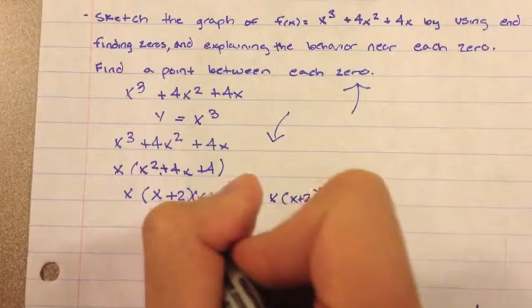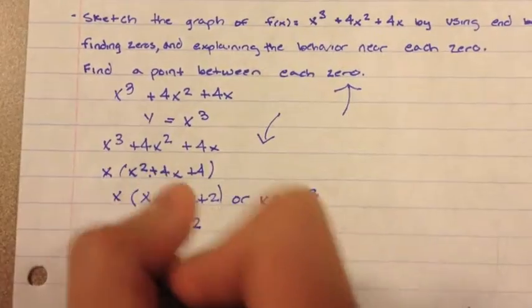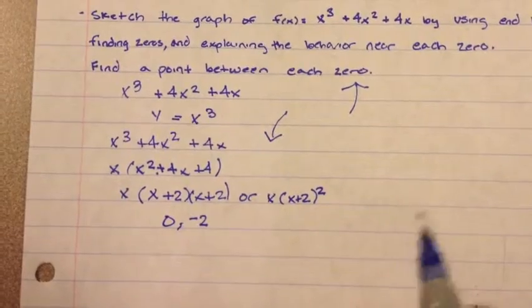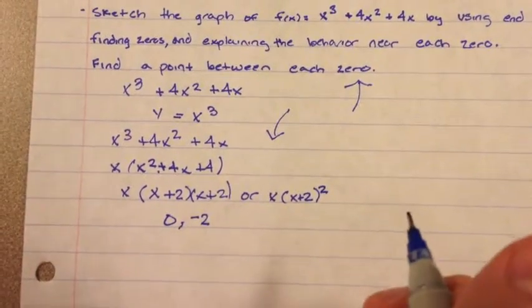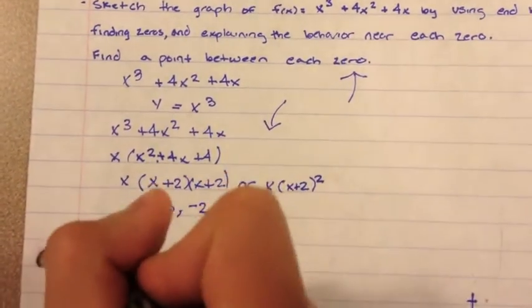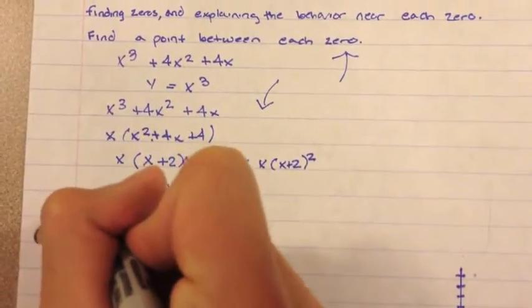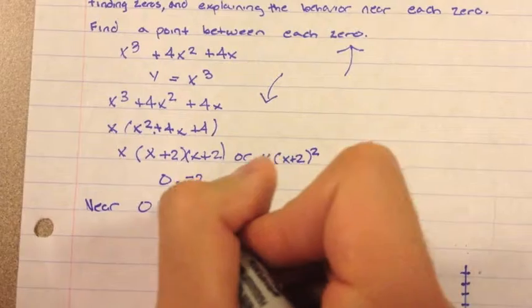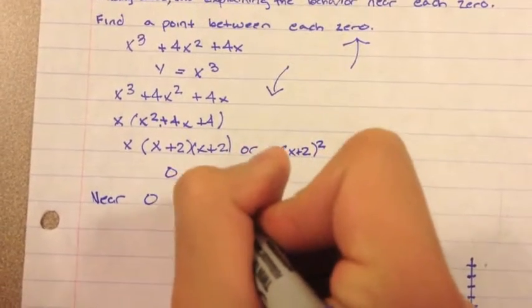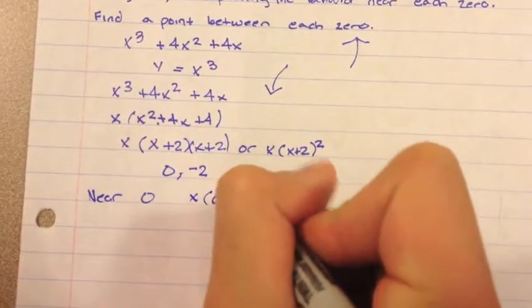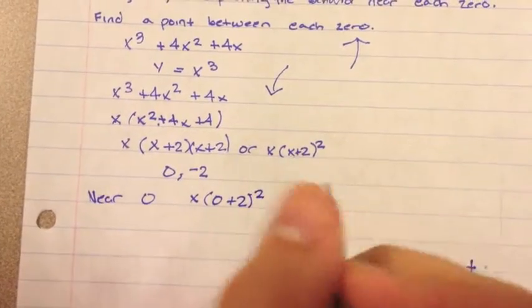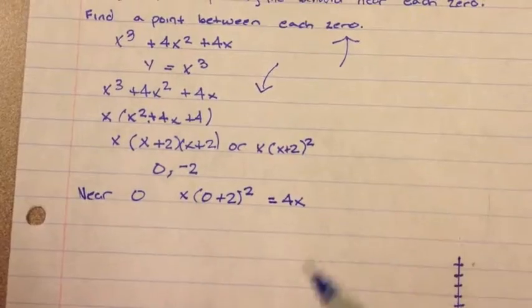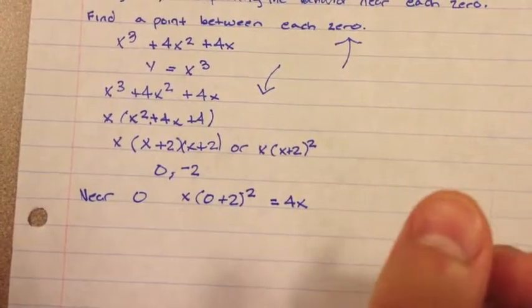Our zeros are zero and negative 2. To find the behavior near each zero, you plug the zero into the factor. So, near zero, you're going to plug in zero into the equation, and that equals 4x. So, the line will cross with a slope of 4x,